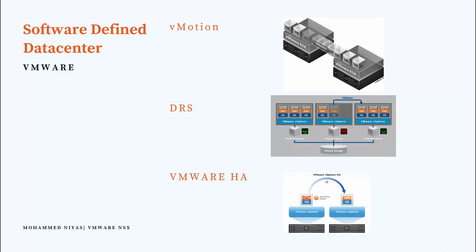Then DRS — Distributed Resource Scheduler — introduced intelligence by monitoring system resources like utilization of memory, hard disk, and CPU. If any particular ESXi host or virtual machine running on it was going to create a contention due to more resource utilization, DRS had the intelligence to automatically migrate off that server to elevate the contention. Then VMware HA came into this mix. With HA, if a server fails, those VMs have the ability to power up on the other existing hosts. Is there any downtime required? Yes, there is a downtime, but it reduced the downtime because of the automated process.